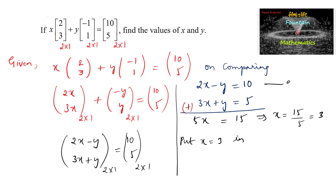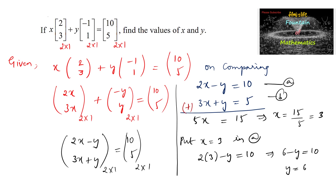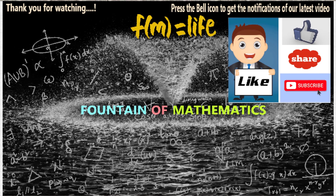Substituting x = 3 into equation (a): 2(3) − y = 10, so 6 − y = 10, giving y = −4. Therefore, the conclusion is x = 3 and y = −4.